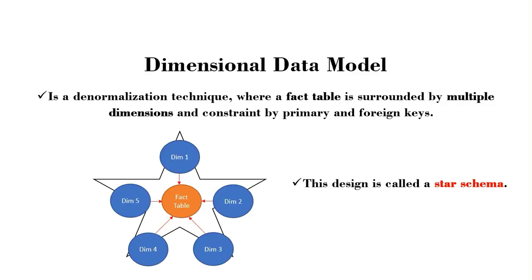A dimensional data model is a denormalization technique whereby you have a fact table surrounded by multiple dimensions, constrained by primary and foreign keys. As you can see in the diagram, we have a fact table in the center and multiple dimensions surrounding it. The arrows pointing from the dimensions to the fact table represent the primary and foreign key relationships, and this diagram is often called the star schema.